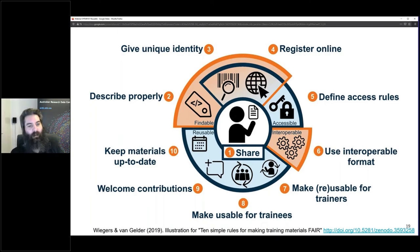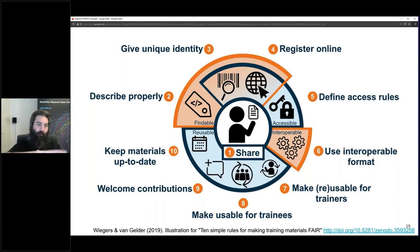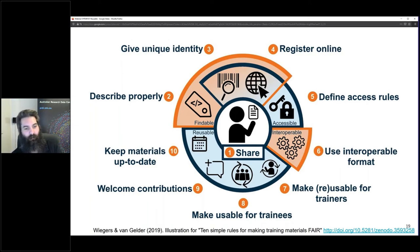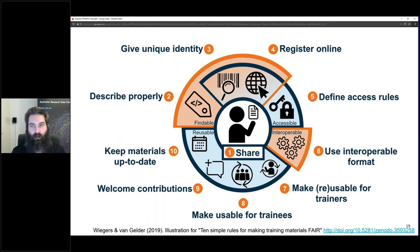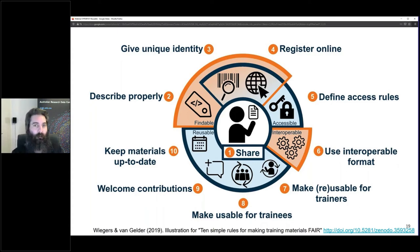Going clockwise around this diagram, not all 10 simple rules are shown, but you can see how there are actions you can take with training materials you create that assist more than one aspect of FAIR — there's a fair bit of overlap between findable and accessible, while interoperable and reusable stand somewhat by themselves. This is a really good practical guide for those of us who develop and deliver training, to help make our training materials as useful as possible — not just to learners but also to other trainers.